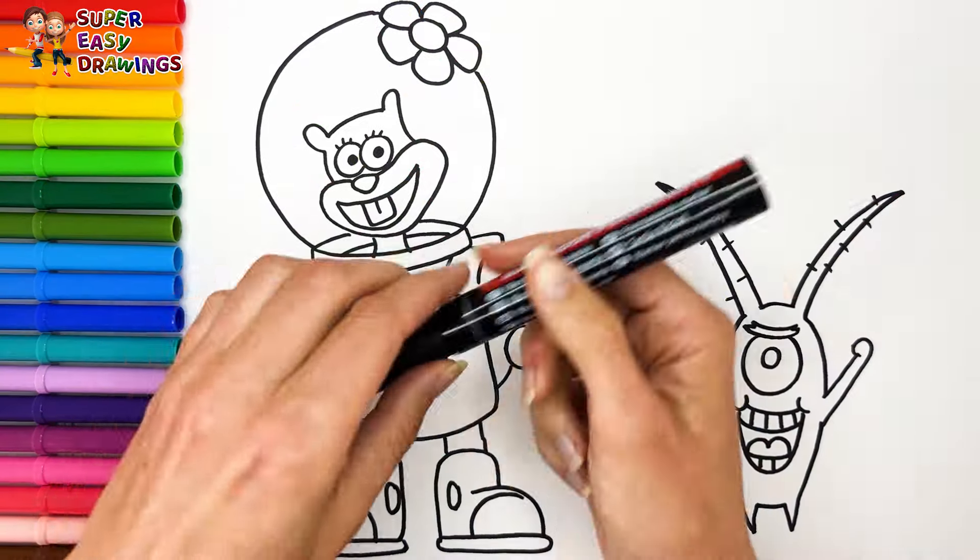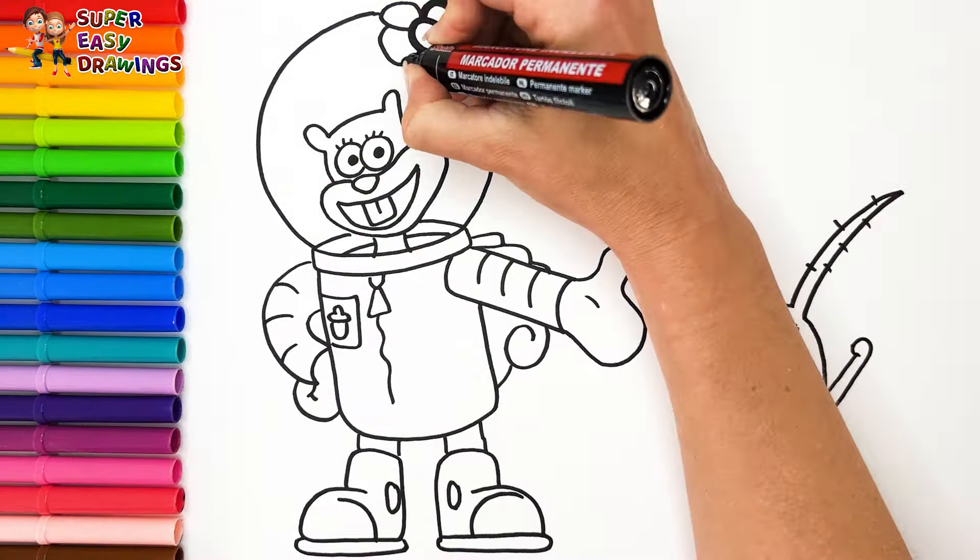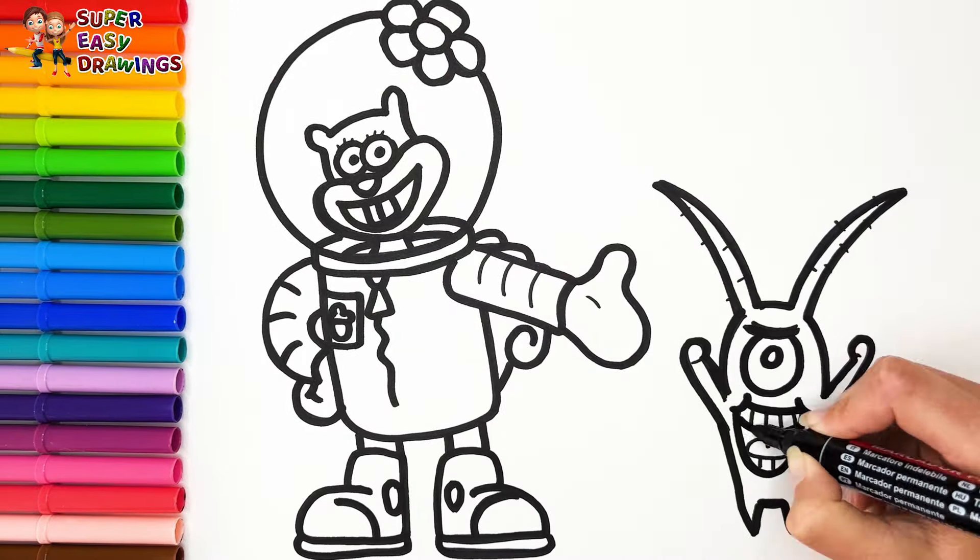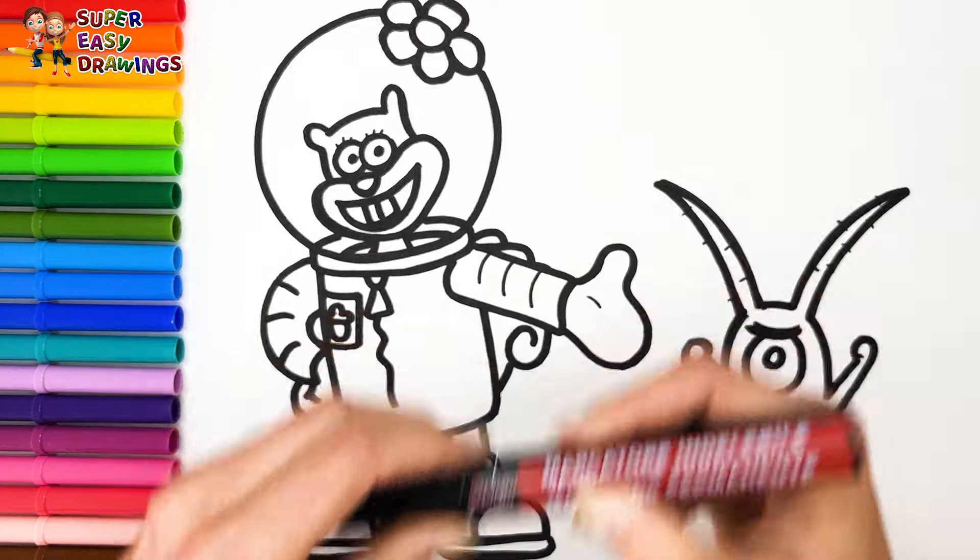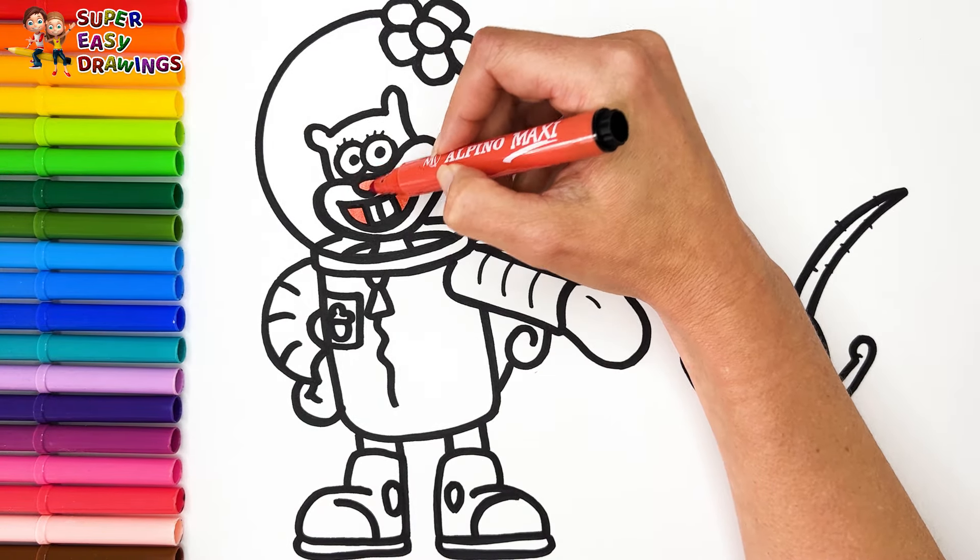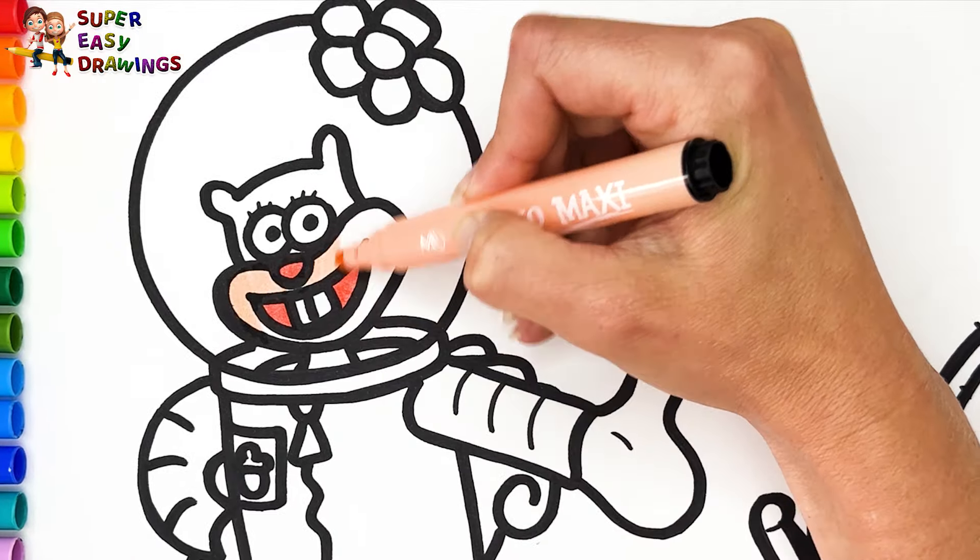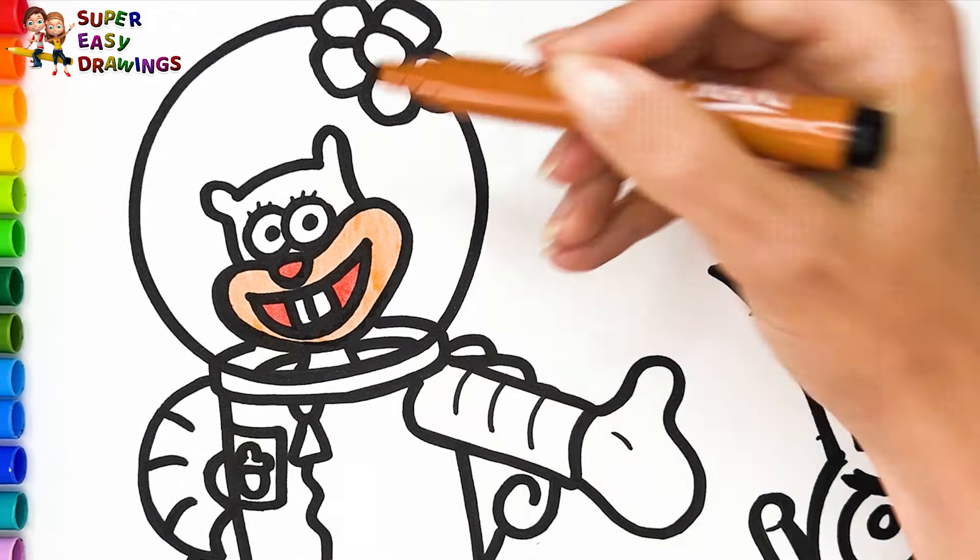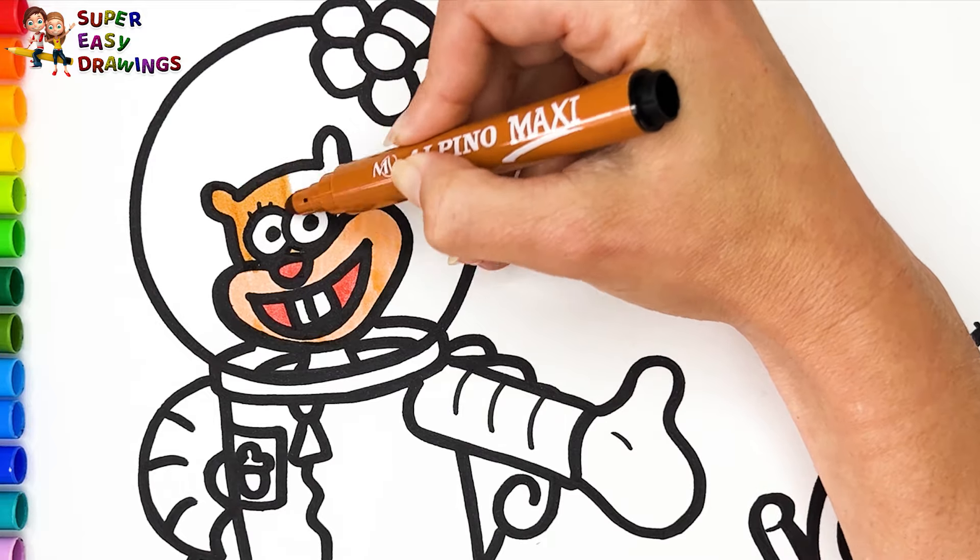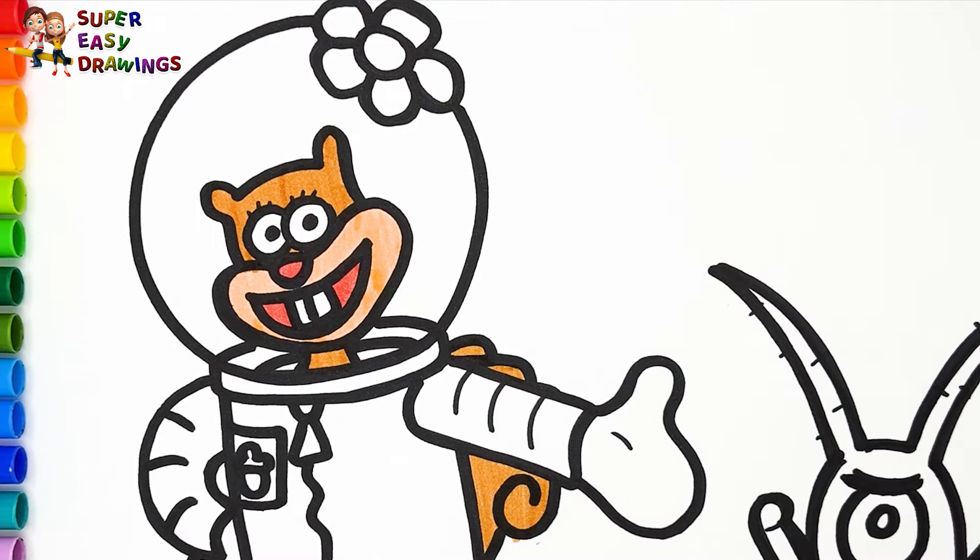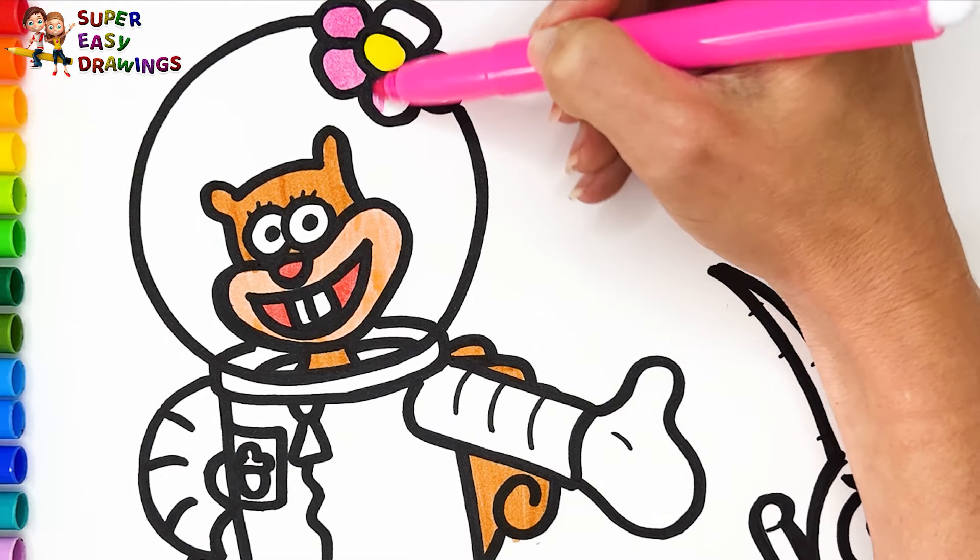Now I'm going to use this black marker to make this beautiful drawing more visible. Let's start coloring. I color Sandy Cheeks first. Two different red markers for her mouth and for her nose. Then I color this part with cream. I use brown for her furry body. Finally I color the flower with yellow and pink.